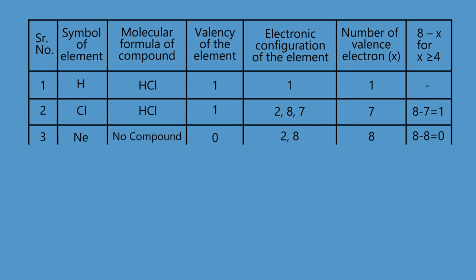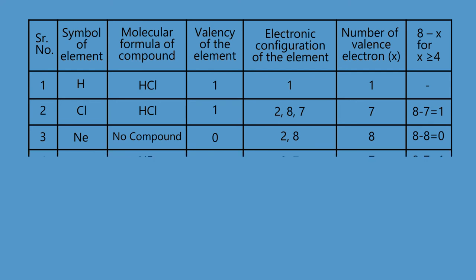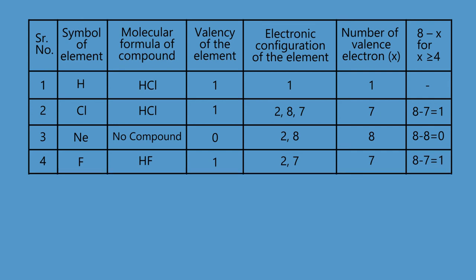Element neon has valency 0. Its electronic configuration is 2,8 and number of valence electrons is 8. So its valency is 8−8 = 0. In the compound HF, the element fluorine has valency 1 and its electronic configuration is 2,7. The number of valence electrons is 7. Therefore, its valency is 8−7 = 1.